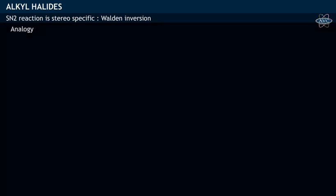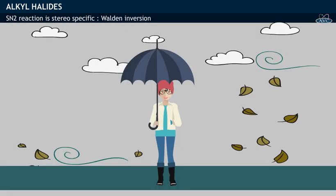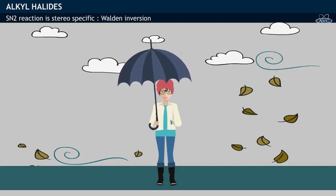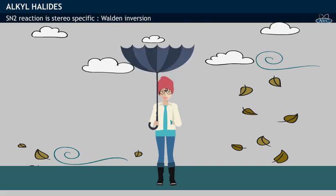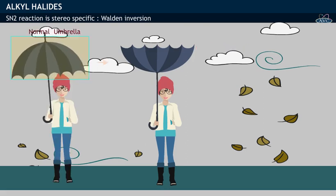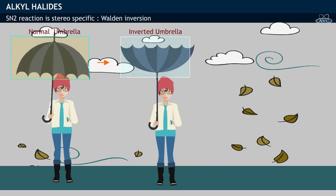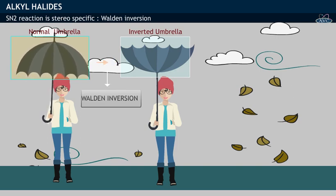This can be understood by an analogy. If a person carrying an umbrella is moving along a high-speed wind, the umbrella turns upside down and takes an inverted umbrella shape. The turning of the umbrella inside-out in high-speed wind can be taken as an example to understand Walden inversion.